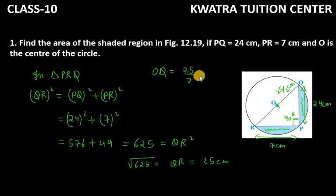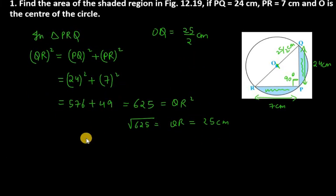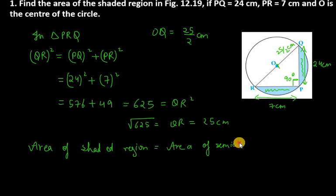Area of shaded region equals area of semicircle minus area of triangle PRQ. The formula is πr²/2 minus half times base times height, where base is PR and height is PQ.